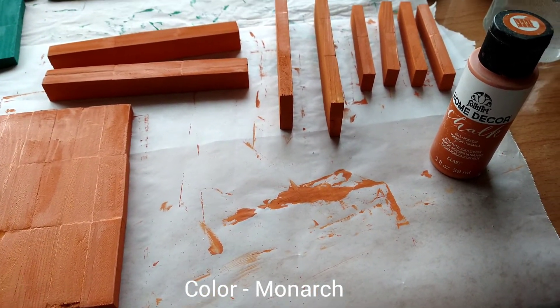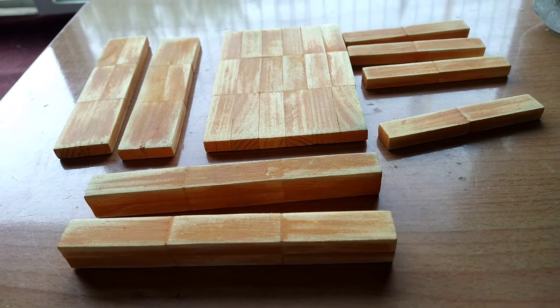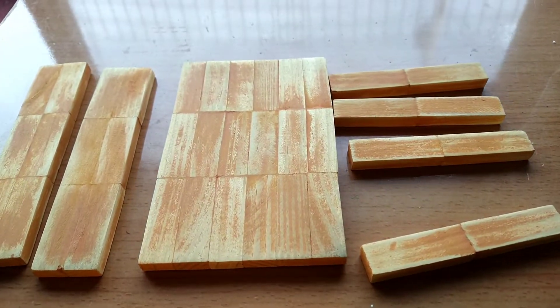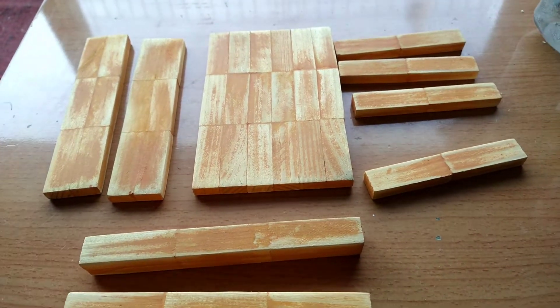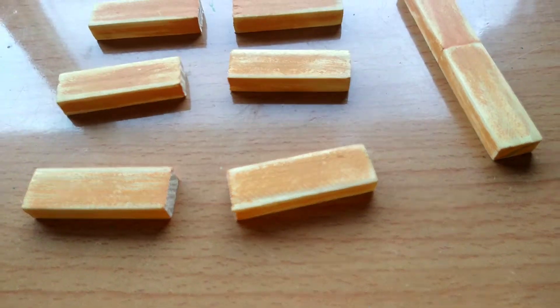And here I'm using chalk paint. After the paint is completely dry I sand down using an electric sander. This is from step 3.